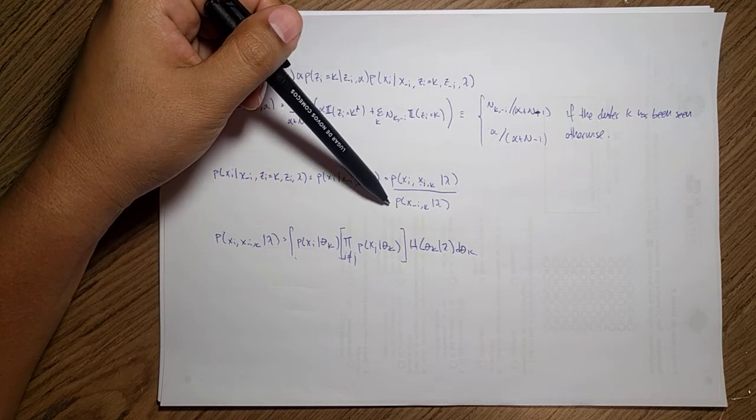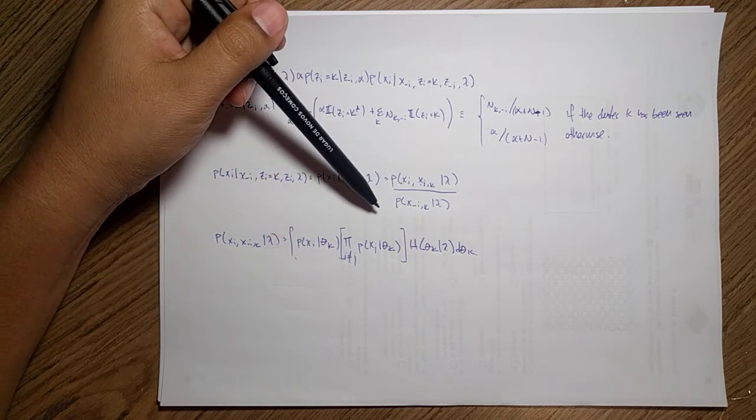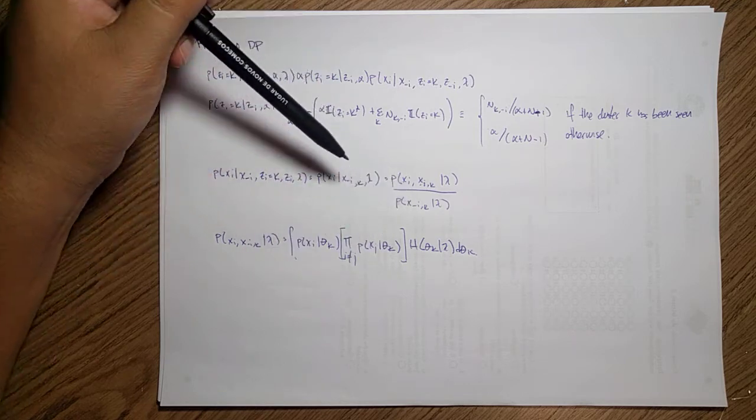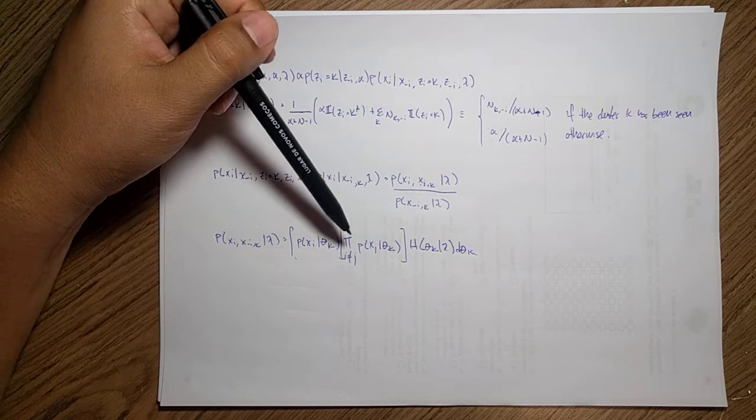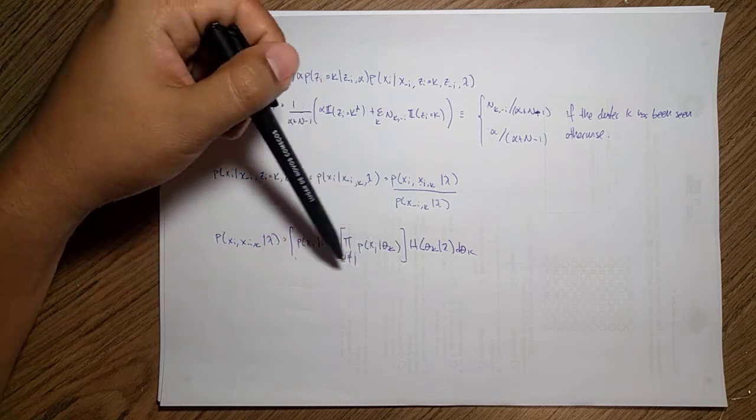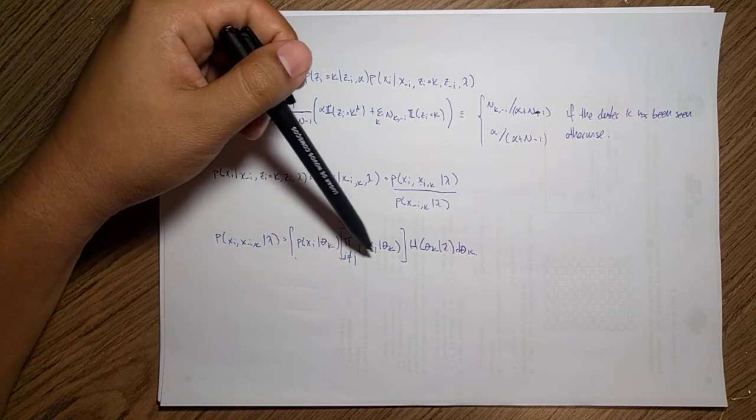This likelihood will depend on what type of model we want to use for the data. We can do the same thing for this other distribution, just that we're going to use only the not i data for this.